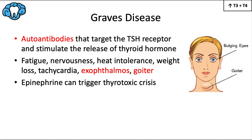The most common cause of hyperthyroidism is an autoimmune condition called Graves' disease, where the body makes auto-antibodies that target the TSH receptor, stimulating uncontrolled release of thyroid hormone. Symptoms include fatigue, nervousness, heat intolerance, weight loss, tachycardia, exophthalmos (bulging of the eyes), and a goiter — a generalized enlargement of the thyroid gland, usually manifesting as a bump in the neck. These patients are predisposed to a bad reaction with epinephrine.